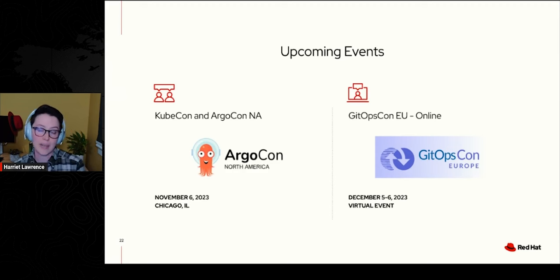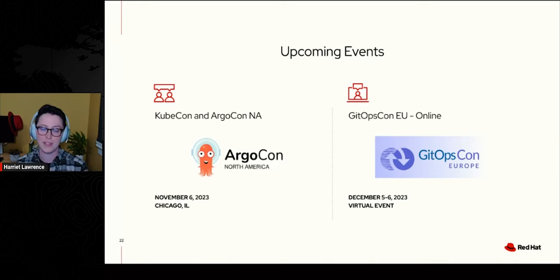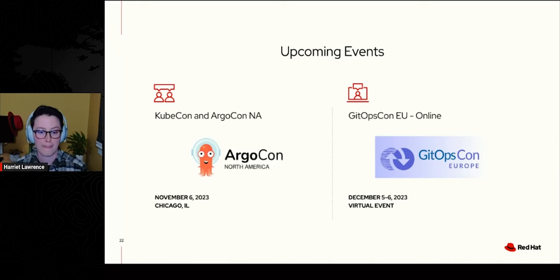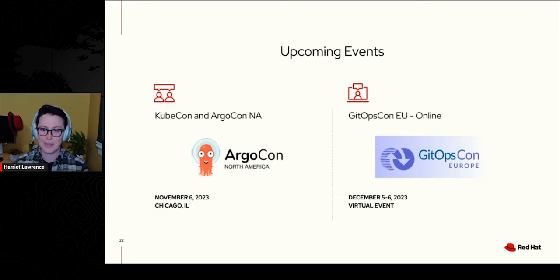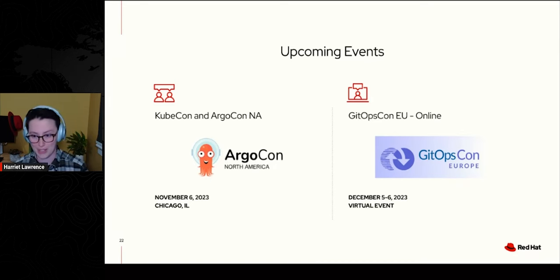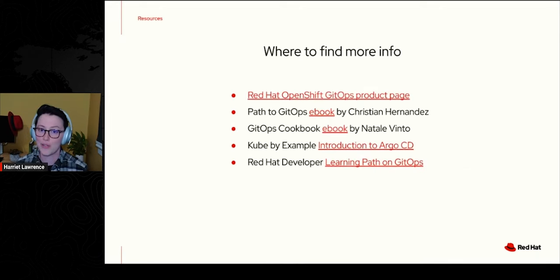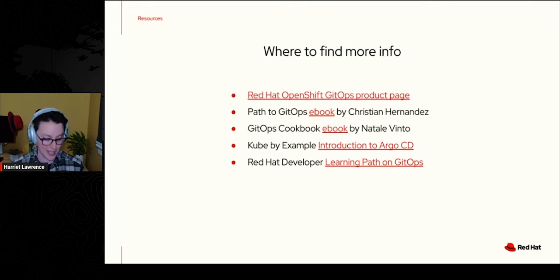Two big upcoming events: ArgoCon NA is co-located with KubeCon in Chicago on November 6th — talks will be posted online by CNCF. GitOpsCon EU is a virtual event on December 5th and 6th — schedule to be announced soon. Links to resources for GitOps, Argo CD, and OpenShift GitOps will be dropped in the chat.